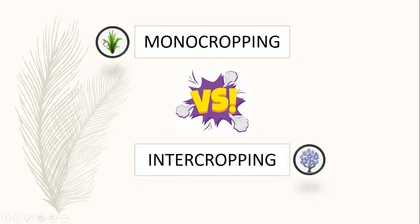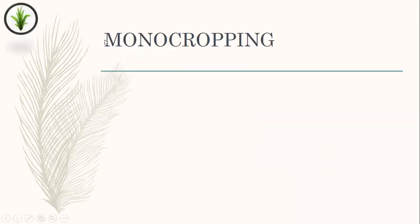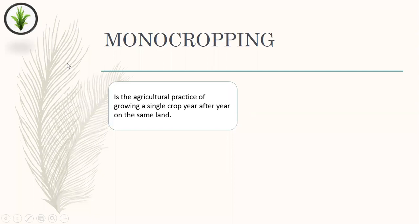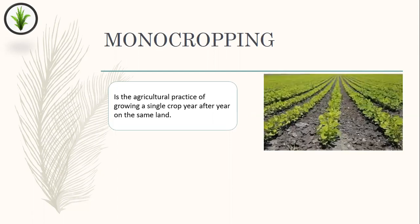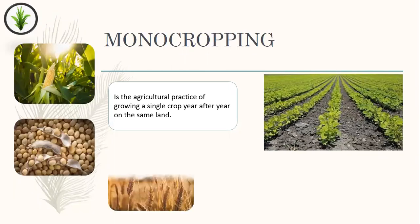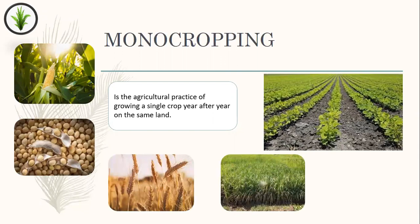First I'm going to give you the definition of monocropping. Monocropping is the agricultural practice of growing a single crop year after year on the same land. As you can see here, this is the picture of monocropping. Maize, soybean, wheat and paddy are the common crops that are often grown using the monocropping system.